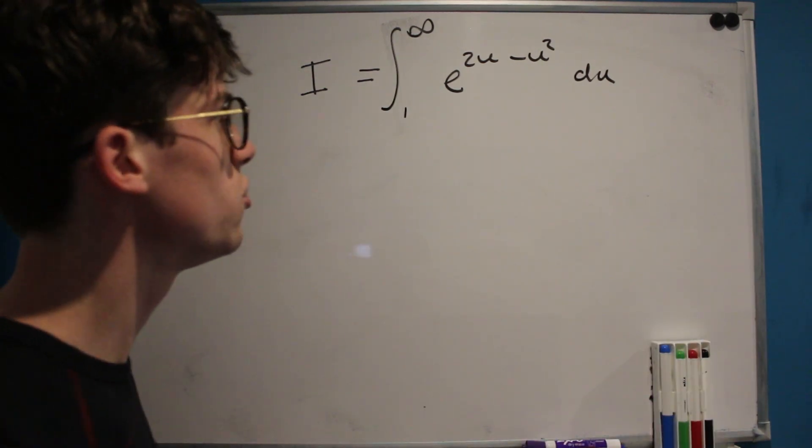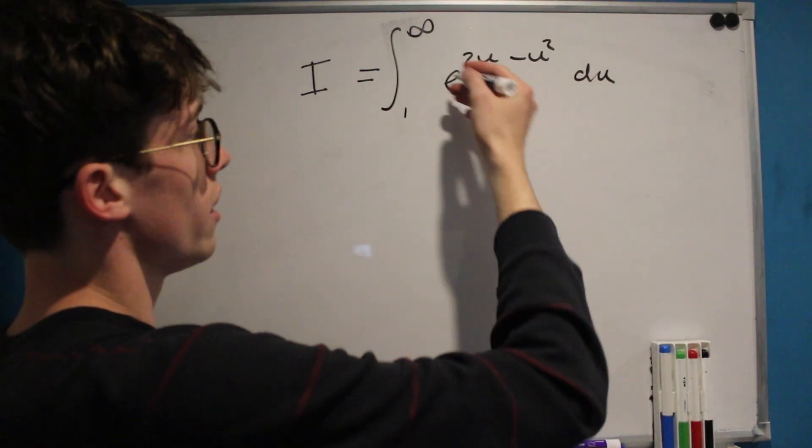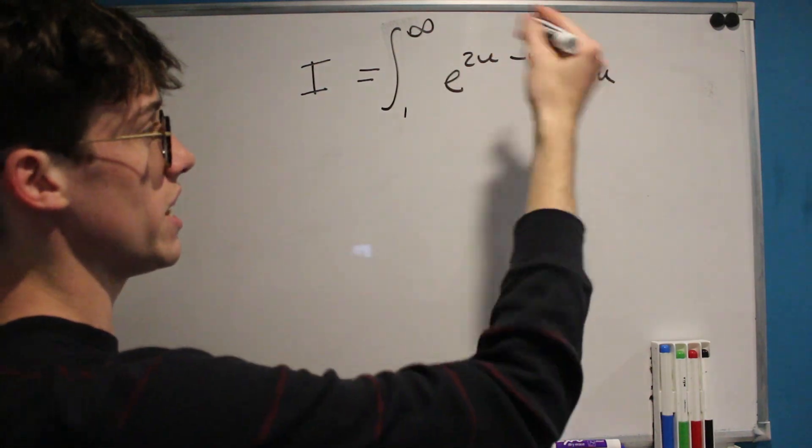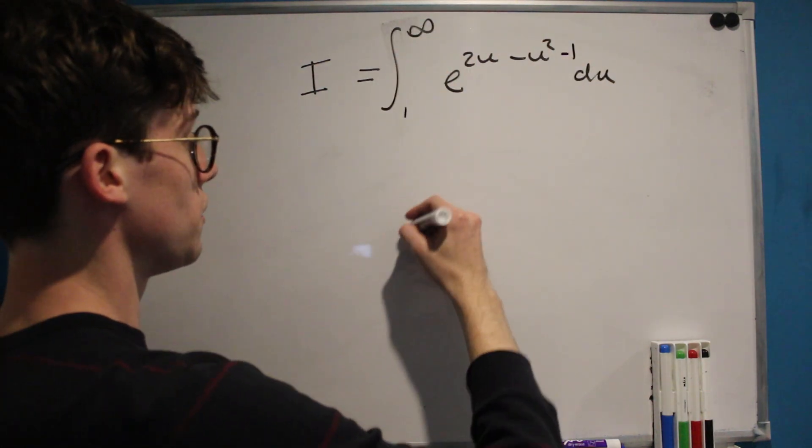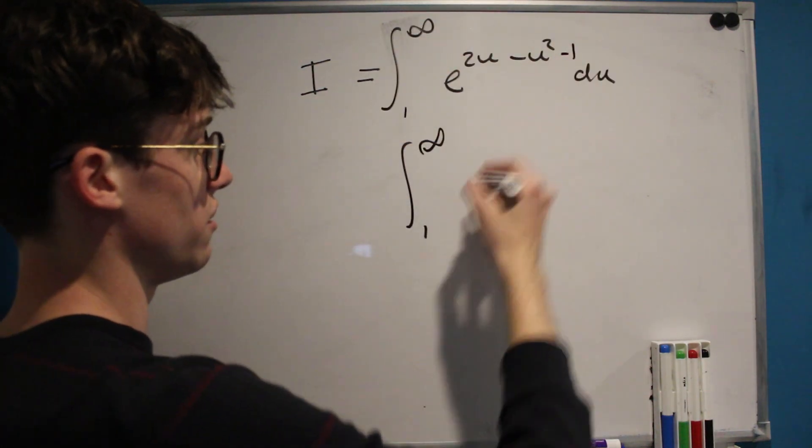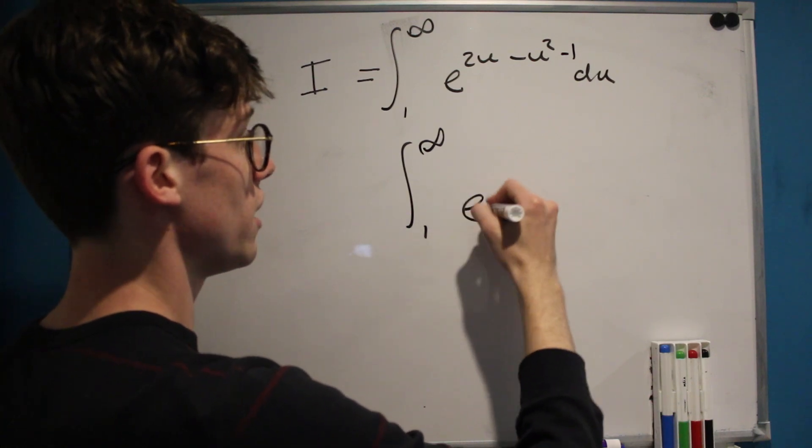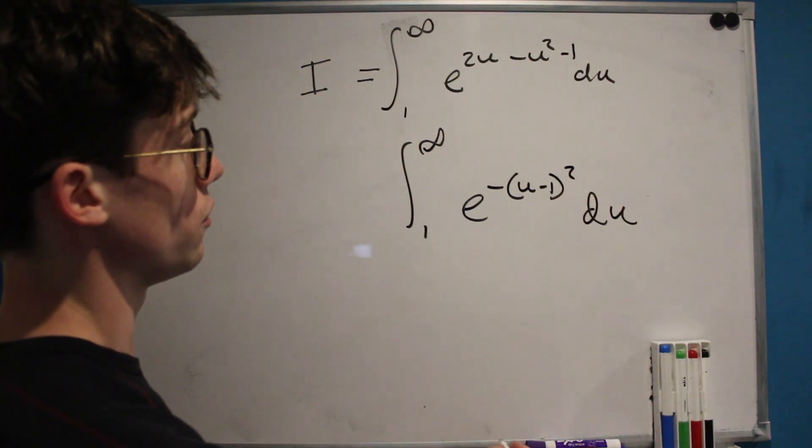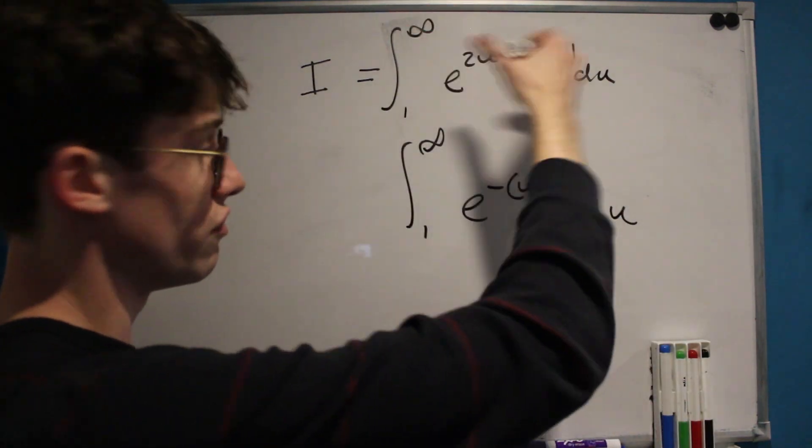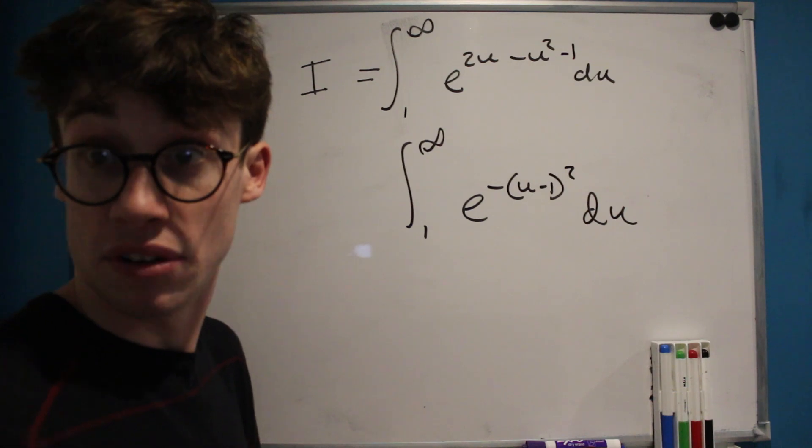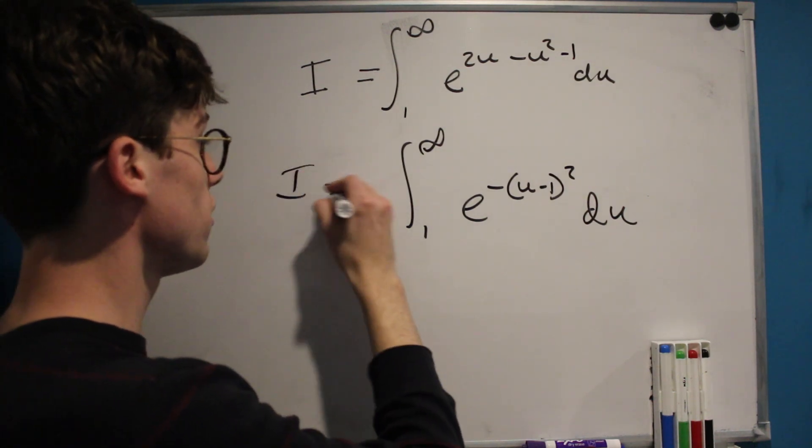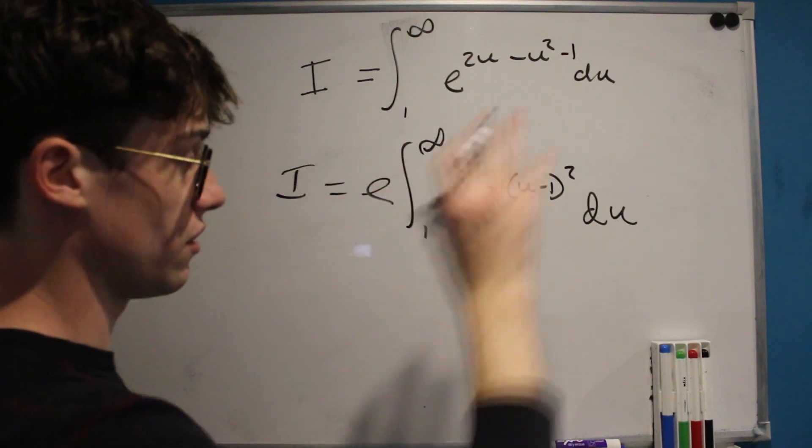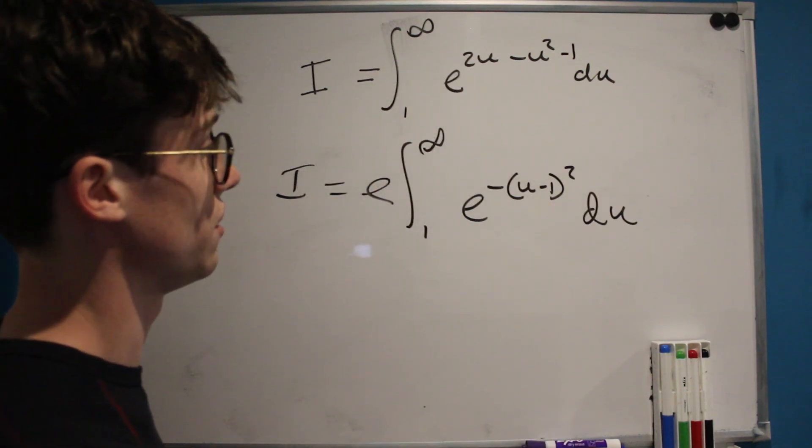So with this knowledge we can kind of clearly see now that what would be ideal would be if we could have a negative 1 here in our integrand, because it would mean that we could rewrite this as the integral from 1 to infinity of e to the negative u minus 1 squared with respect to u. We can't go around just dividing by e like that without countering for it somewhere else, so let's multiply by e on the outside of the integral and this ensures that everything has stayed the same.